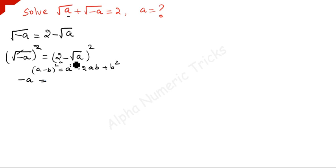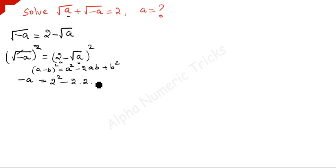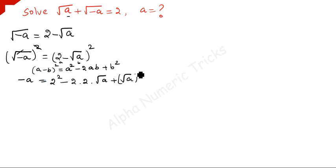So, what is a here? a is equal to 2 and b here is square root of a. So we have 2 squared minus 2 times 2 times square root of a, plus square root of a, the whole squared.